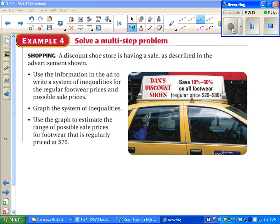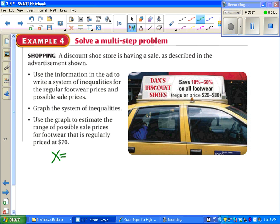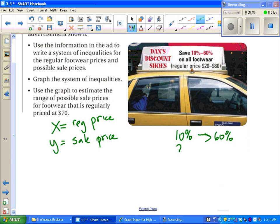We're told we need to make a system of inequalities that deals with the regular and sale prices of the shoes. So maybe we could say X is the regular price of a shoe and Y could be the sale price of a shoe. Now let's see what's really going on here. We're getting 10% to 60% off of our shoe. And the shoes are normally $20 to $80.